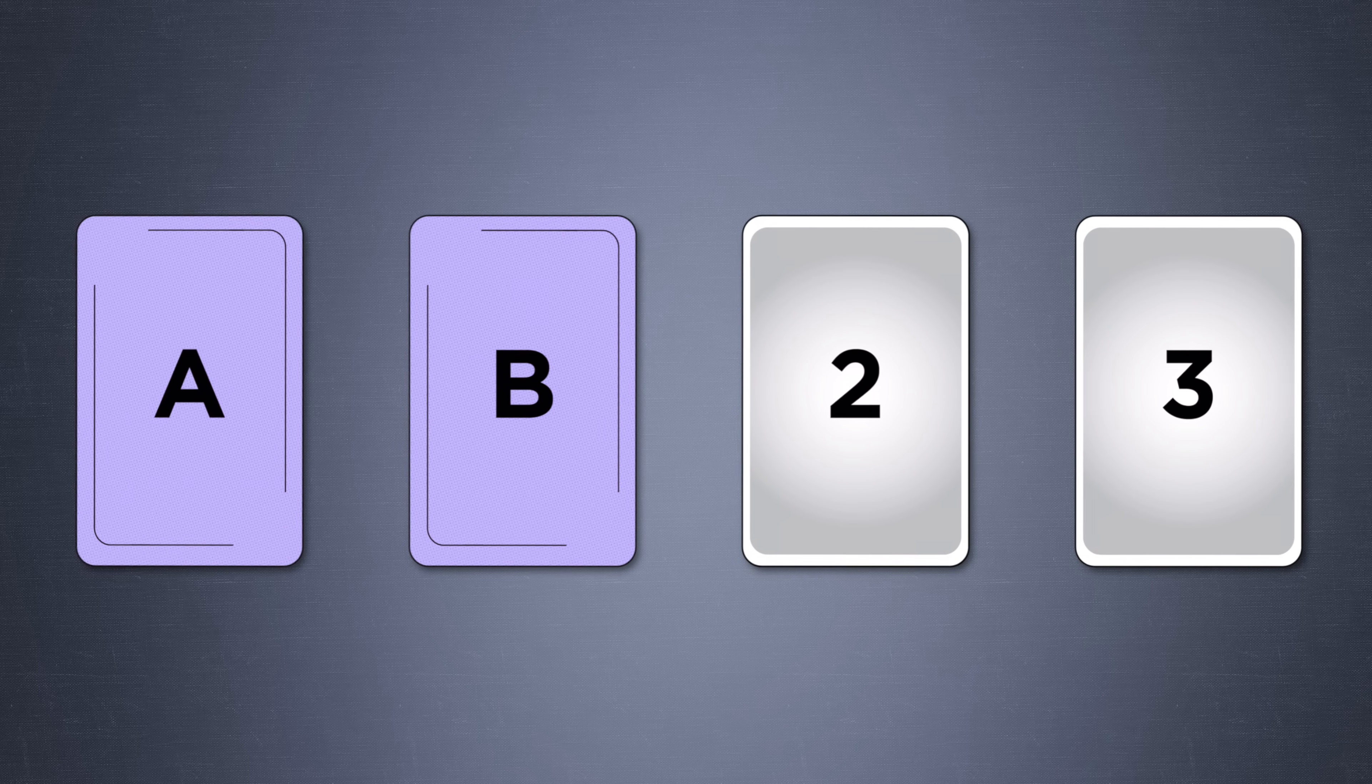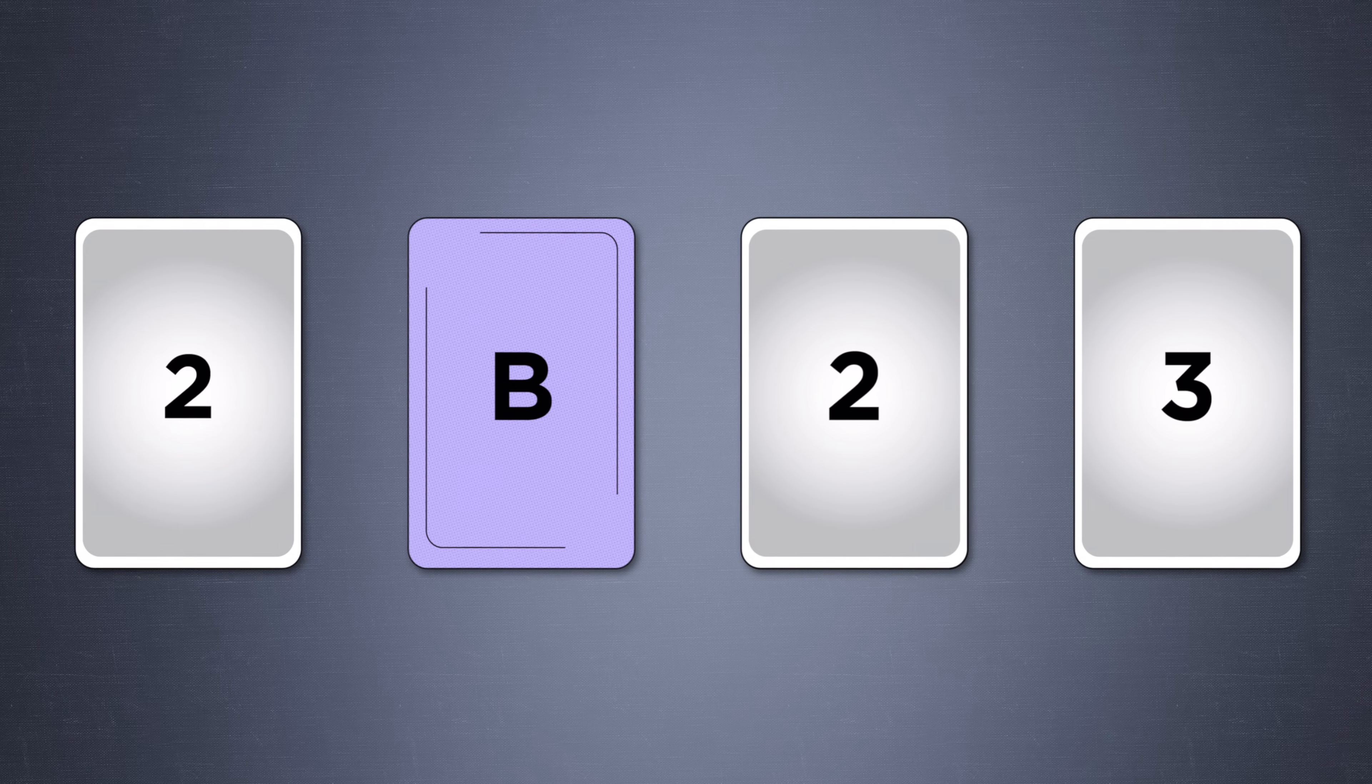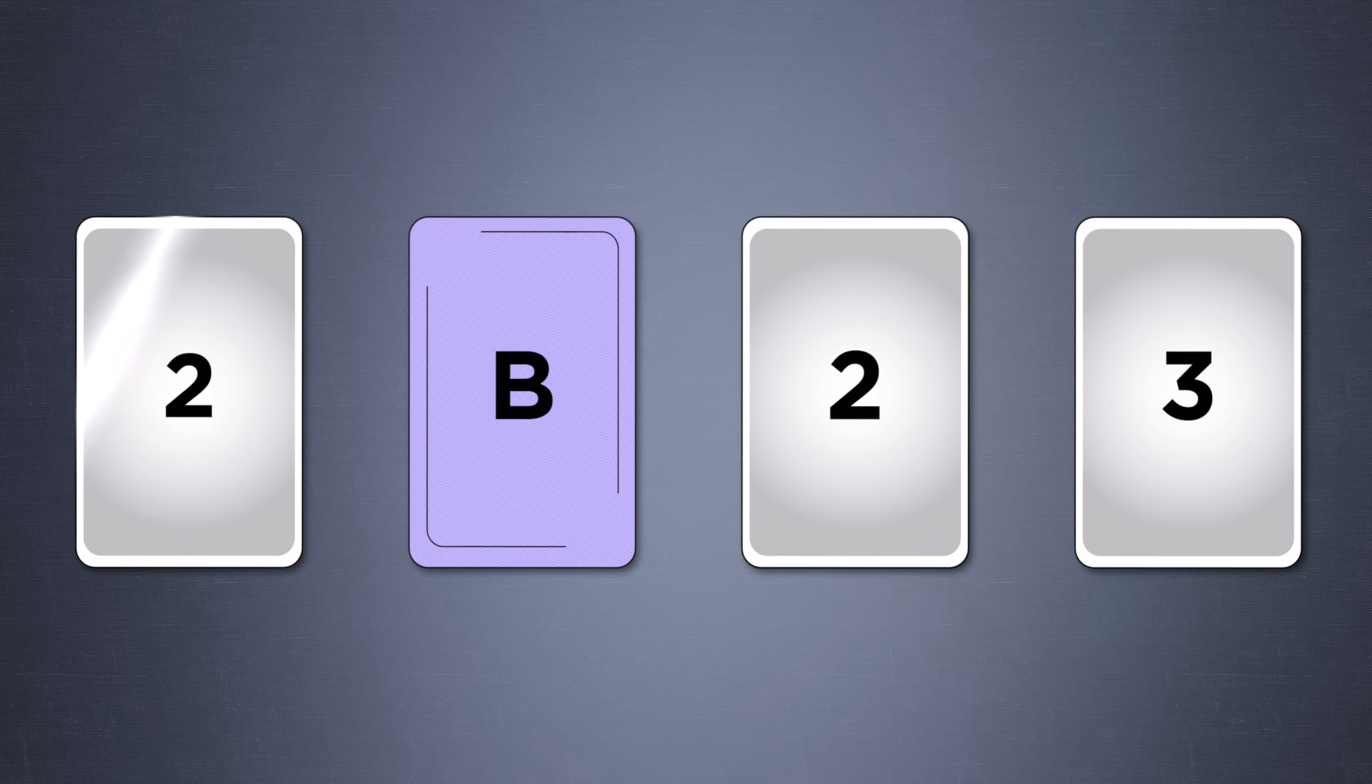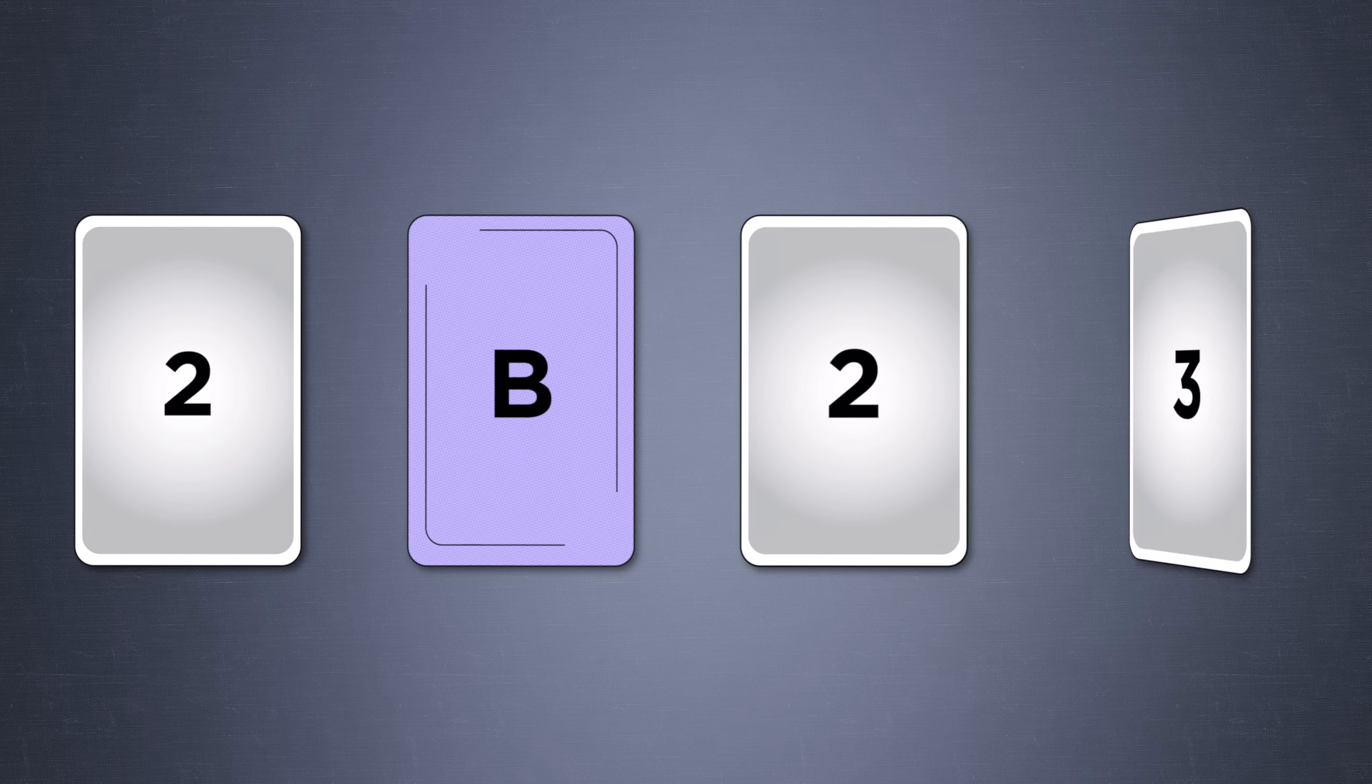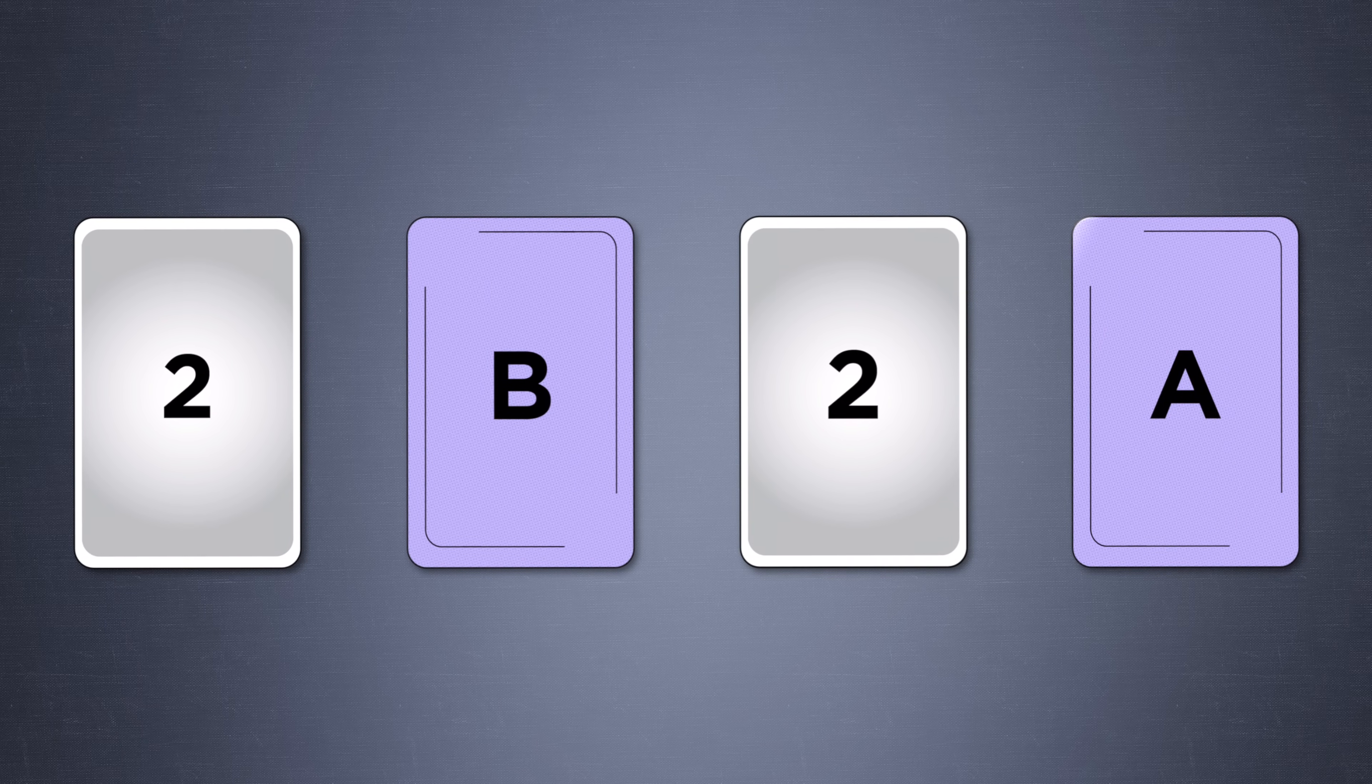This step is often overlooked because our minds are inclined to seek confirmation rather than disconfirmation when testing a rule. When you see the A card, you might instinctively want to check it to confirm the rule to see if there's a 2 on the other side. Whereas flipping over the 3 card doesn't immediately confirm the rule. It only has the potential to disprove it.